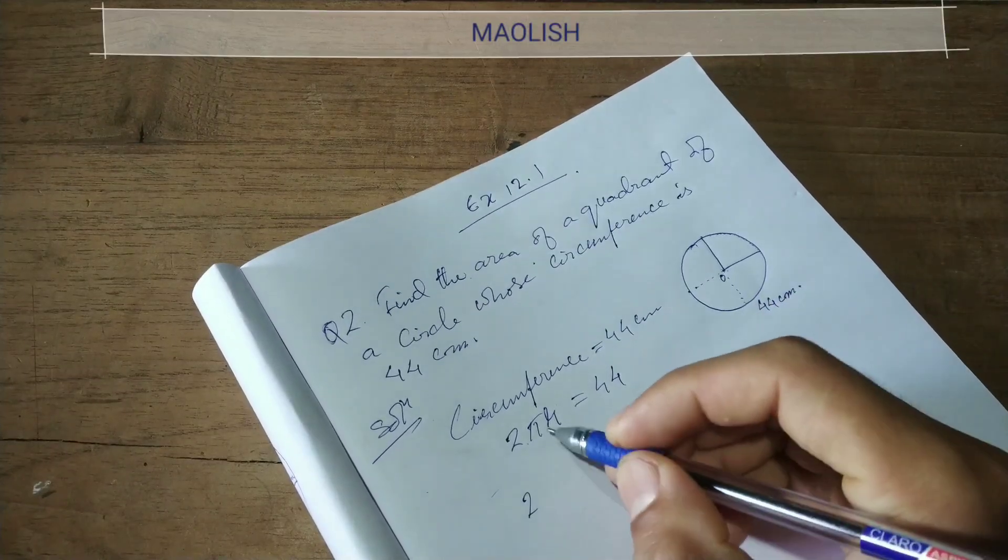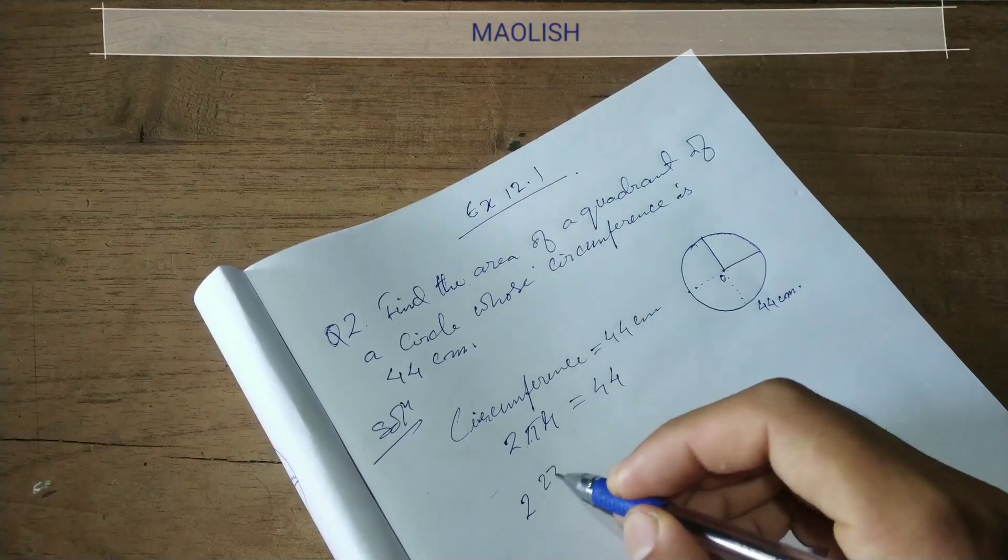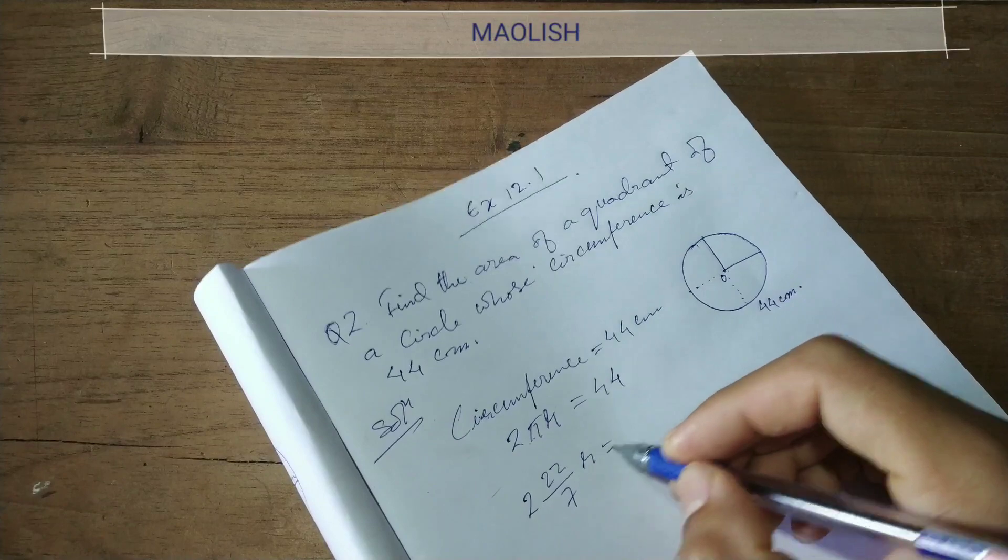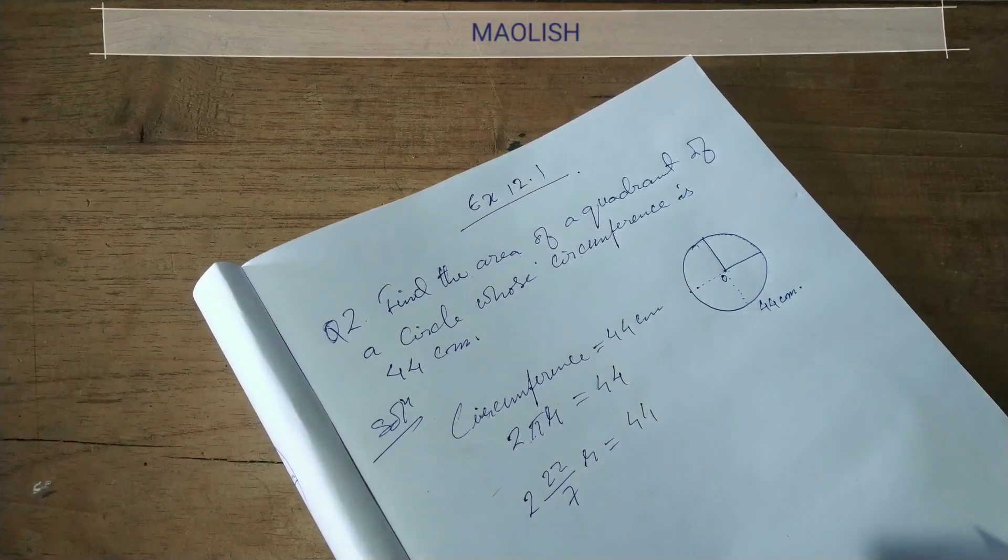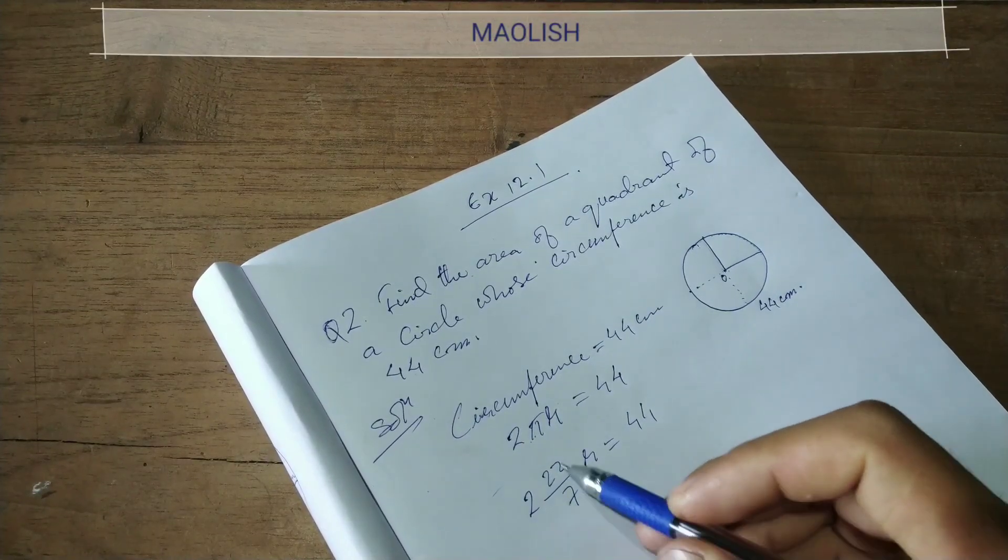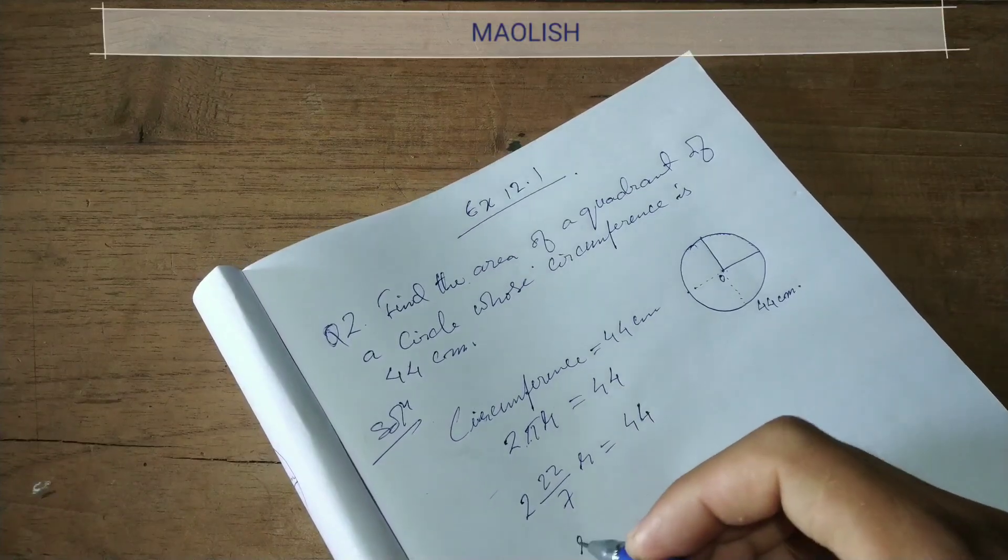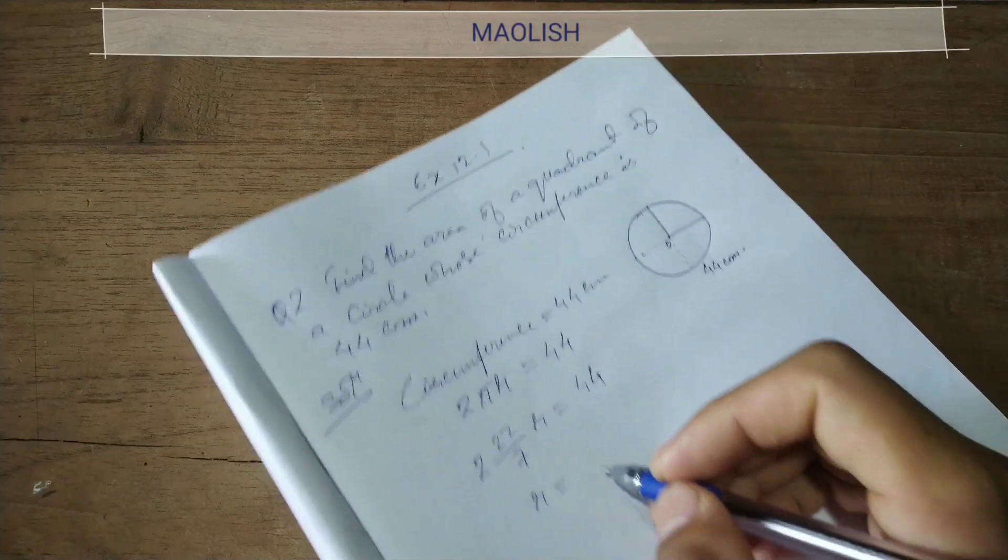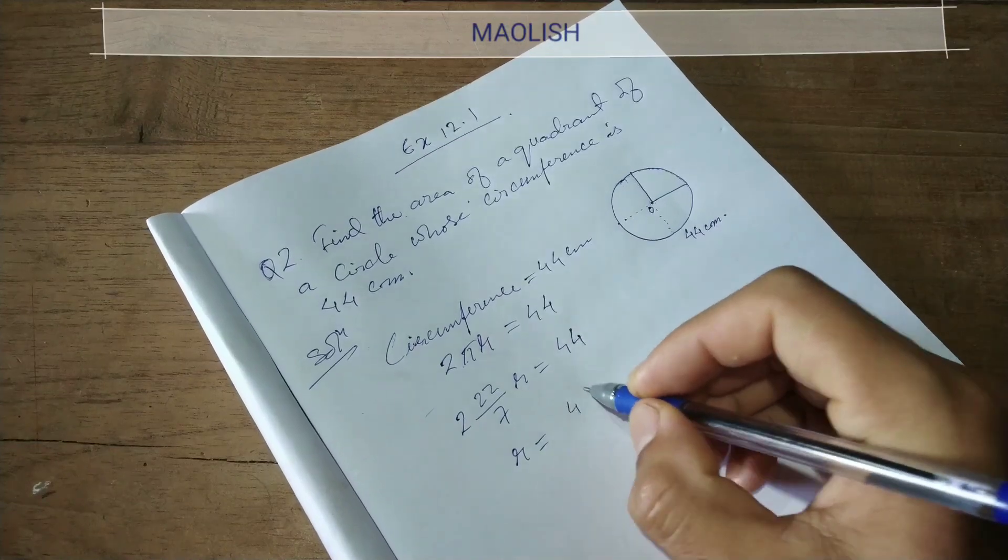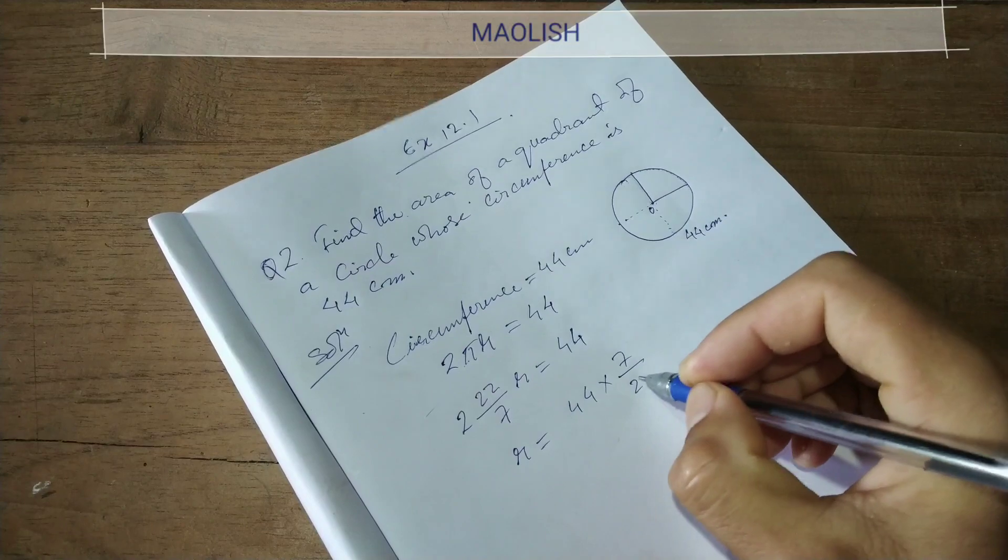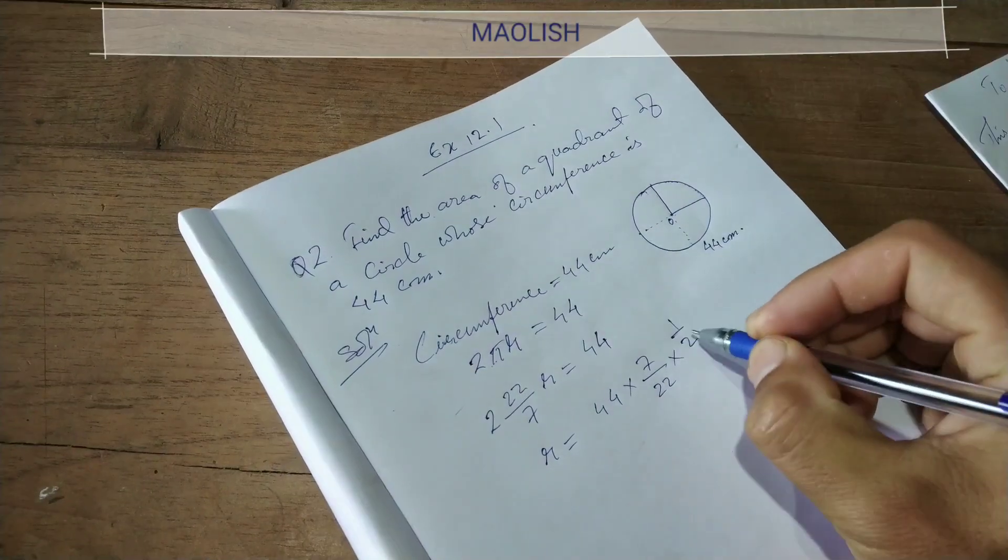So, 2 into pi, pi value is 22 by 7, into r equal to 44. So 2 into 22 by 7, transpose to the right hand side.